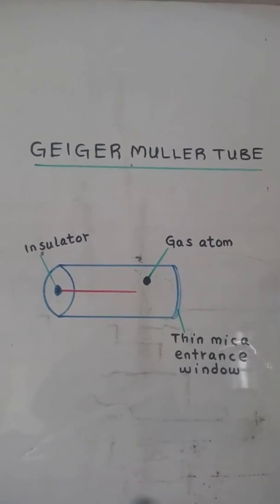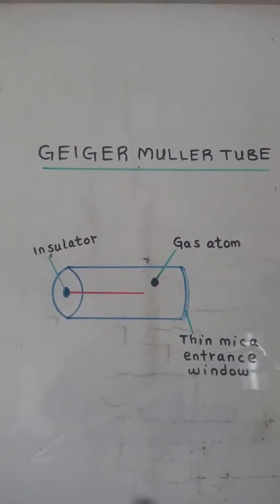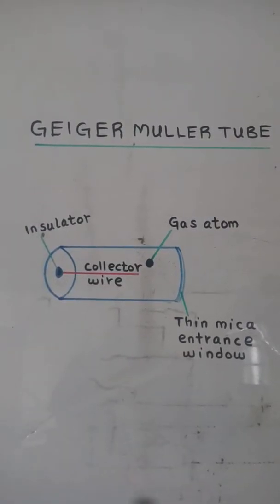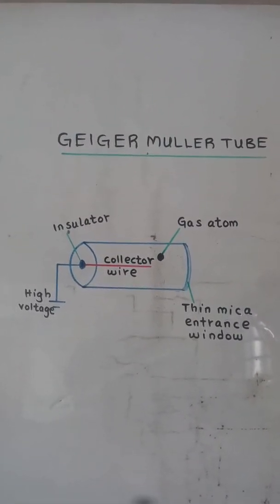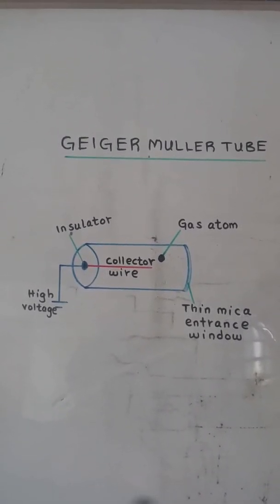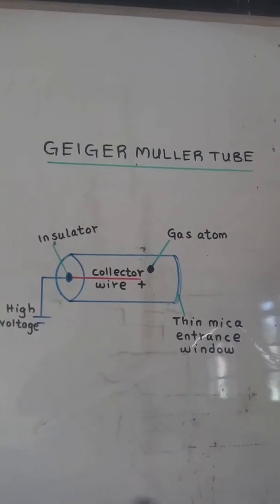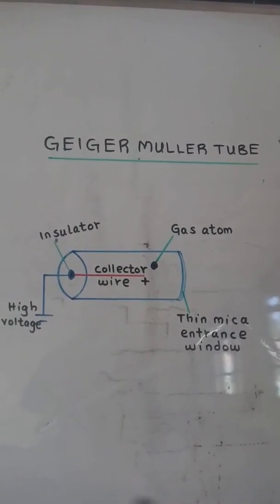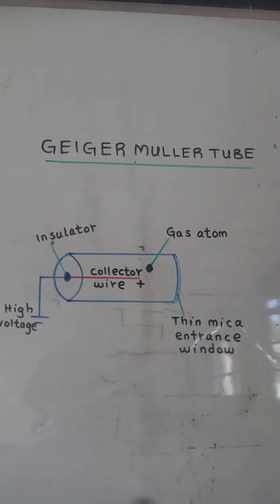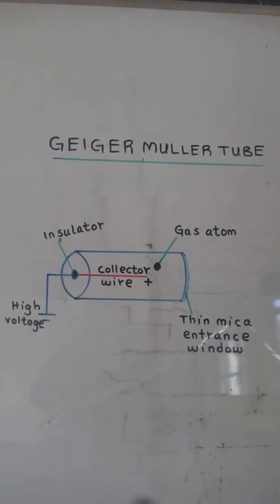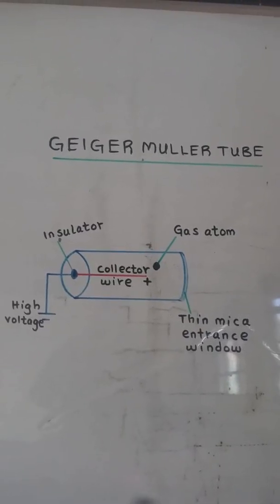A collector wire runs through the center of the tube which is maintained at a high positive voltage. The inside of the tube is coated with metallic film that is maintained at a high negative voltage relative to the collector wire.